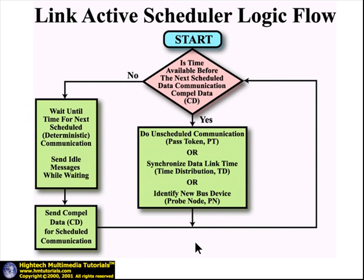This flow diagram for LAS operation shows two logical branches from the starting point: one for high-priority scheduled communications and the other for lower-priority unscheduled communications. In executing its algorithm, the LAS first tests to see if there is sufficient time available to carry out other bus activity before the next scheduled communication. If there is insufficient time, the LAS waits until the next deterministic data transfer comes due. Depending on the duration of this waiting period, the LAS may issue one or more idle messages indicating that the bus has been idled. This is necessary to ensure other devices on the bus don't mistakenly assume the LAS has failed and is no longer scheduling communications.